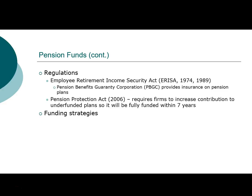For a company funding pension plans, they typically apply one of two strategies: match funding, meaning they put in money that matches the expected cash outflow, or projected funding, meaning they look at the value of the pension and match the value of the pension with the same amount of investments.